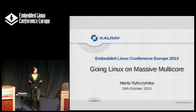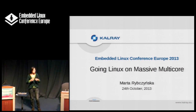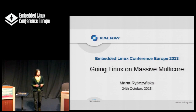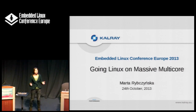But today it's no longer possible. We do have limits at the level of technology — we cannot do that anymore. So what people started to do is put, at the beginning, two, then four, then eight cores in one processor. And it doesn't seem that we are going to find another solution, so it seems we are going to go up and up with the number of cores.